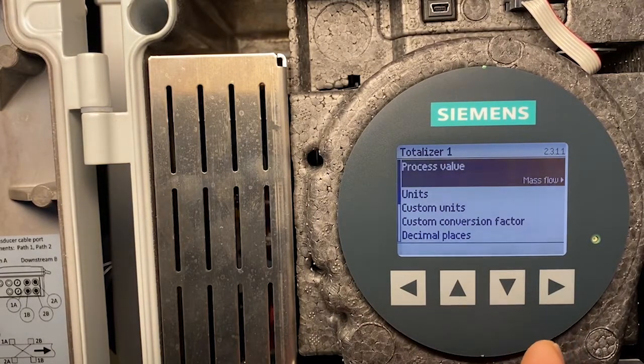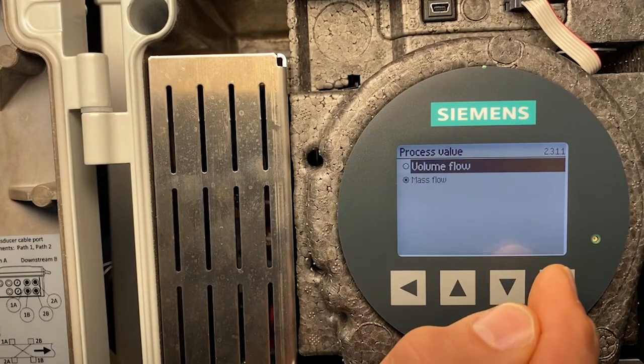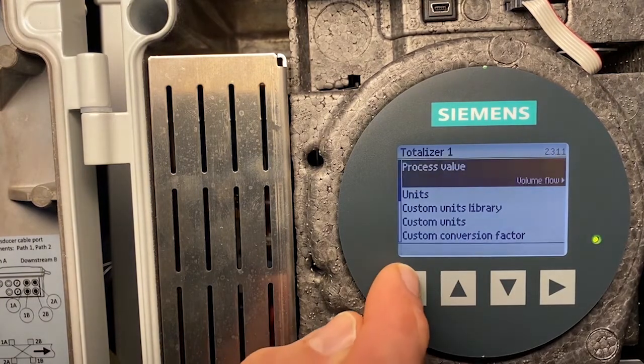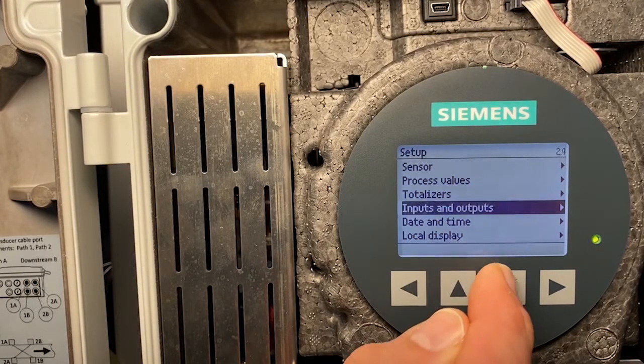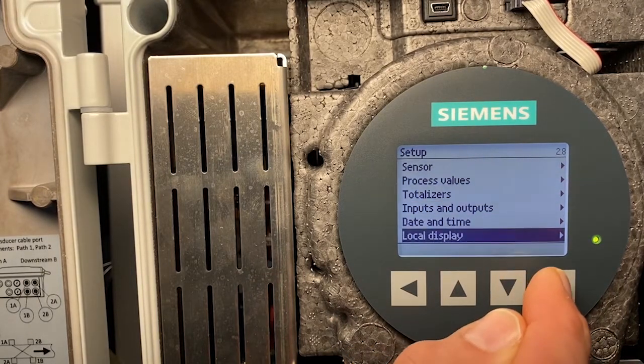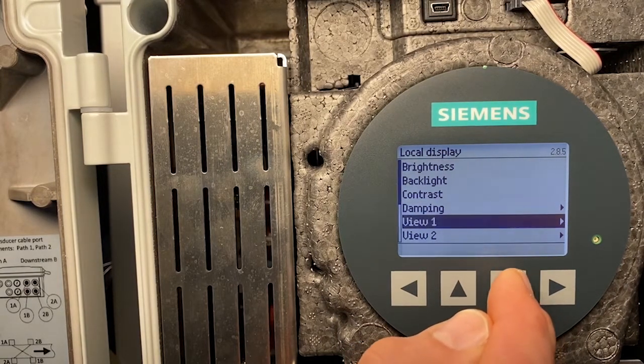I must define what is totalizer 1. This can be done in the process value settings. Back to local display. Now, we go to View 3.